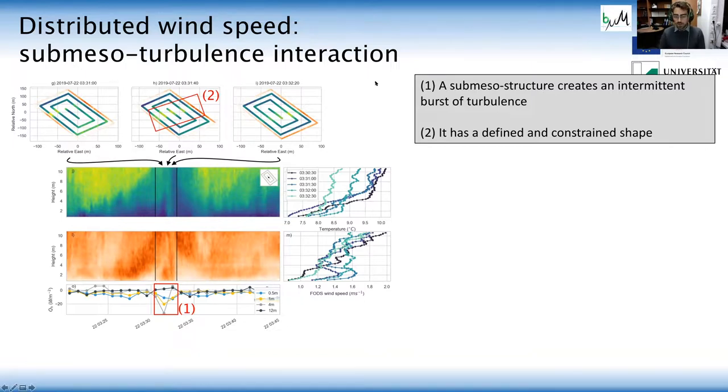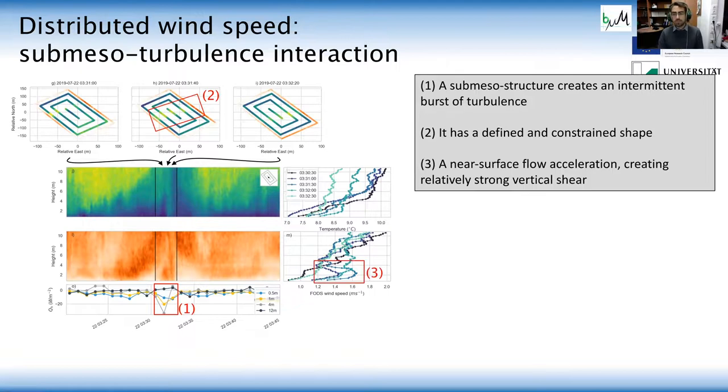This generates then at the surface, this interesting flow nose. So you kind of see that as the sub-meso motion actually interacts with the tower, you get this acceleration to flow, which is totally missing from the sonic anemometer point observations.